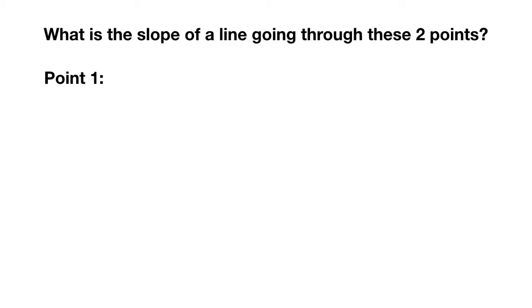Here's your last problem for today. What is the slope of a line going through these two points? Point 1 is at 12 comma 16. Point 2 is 34 comma 49.